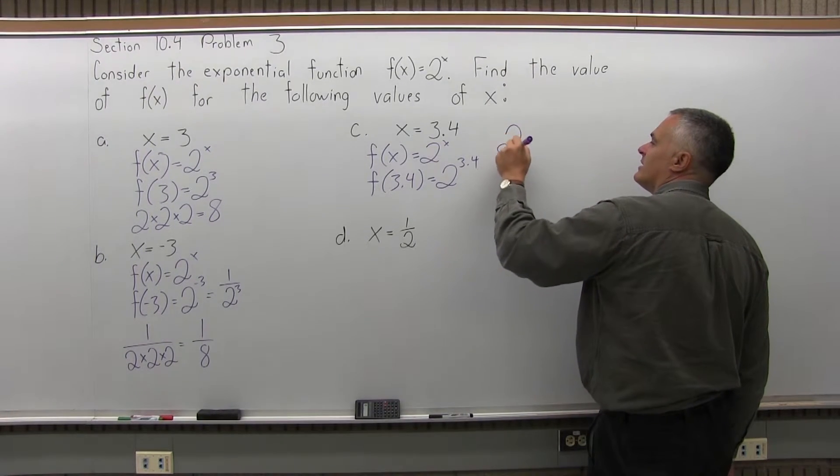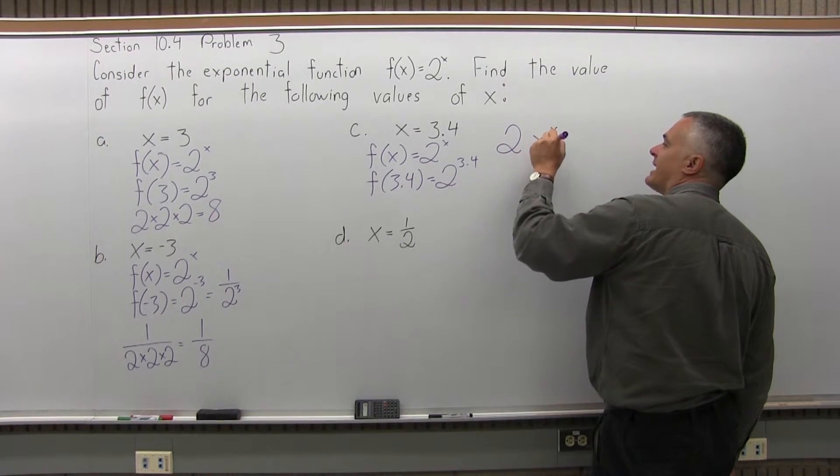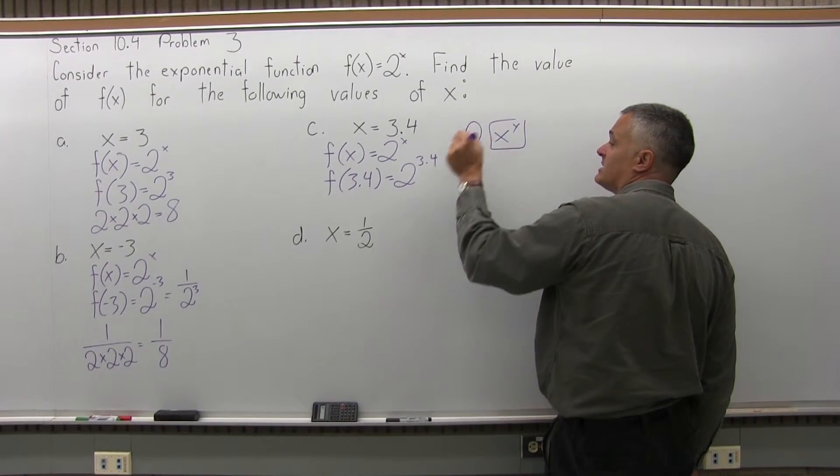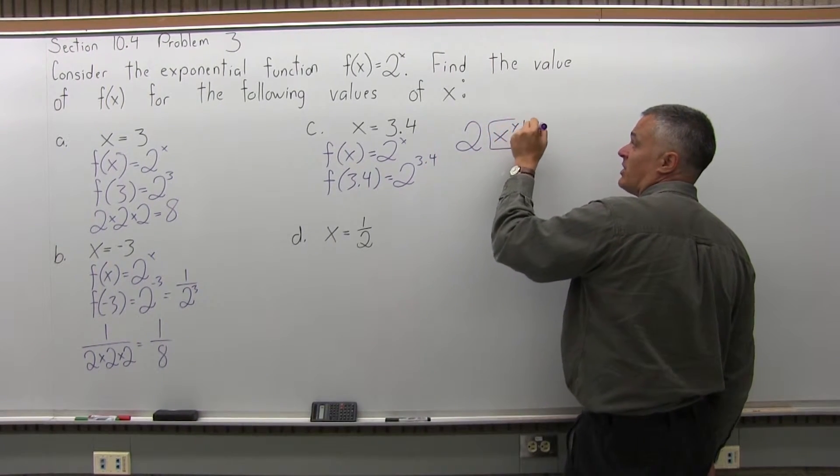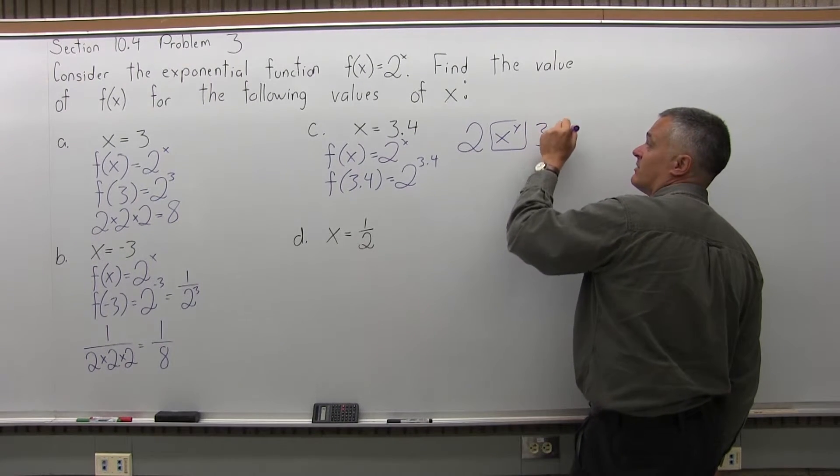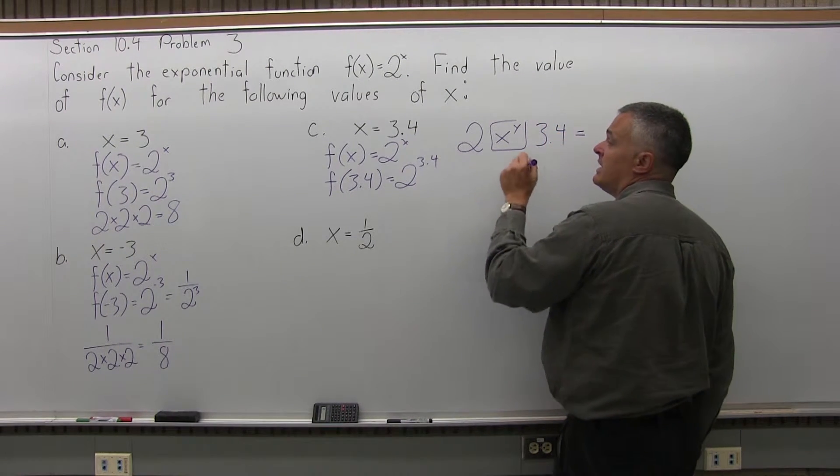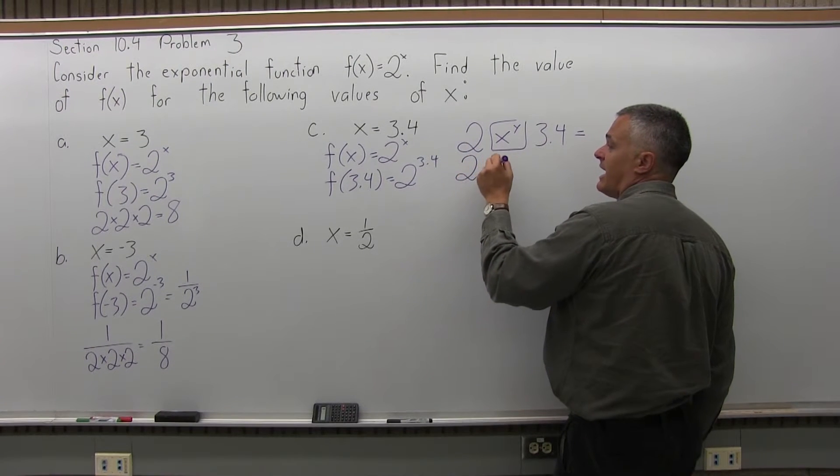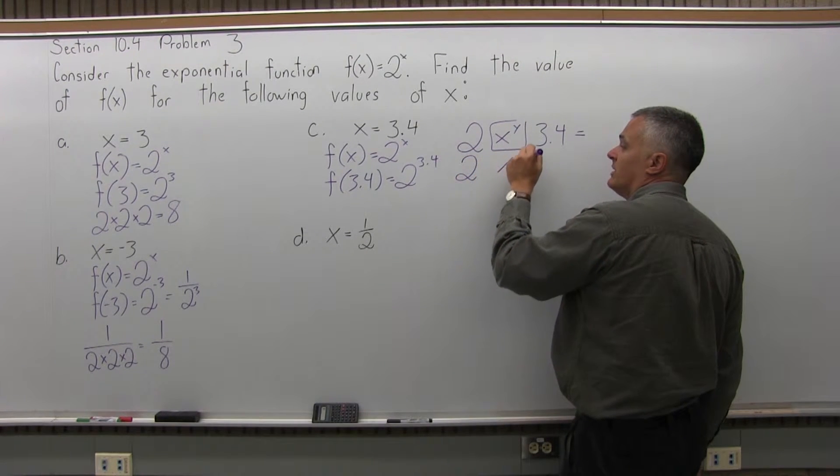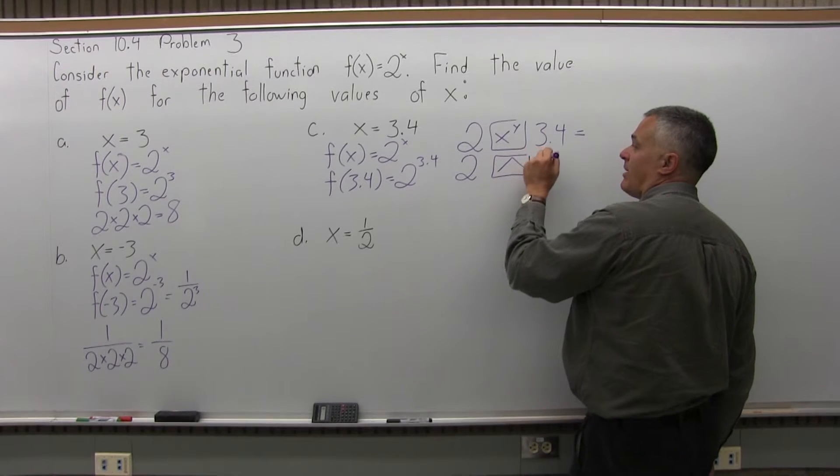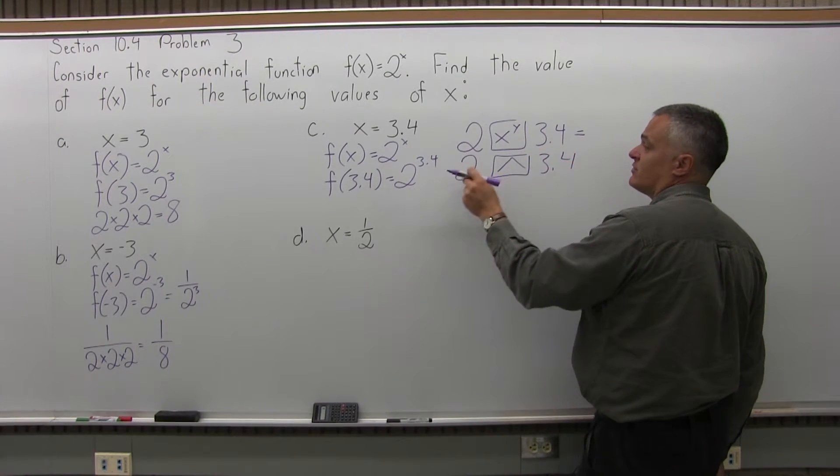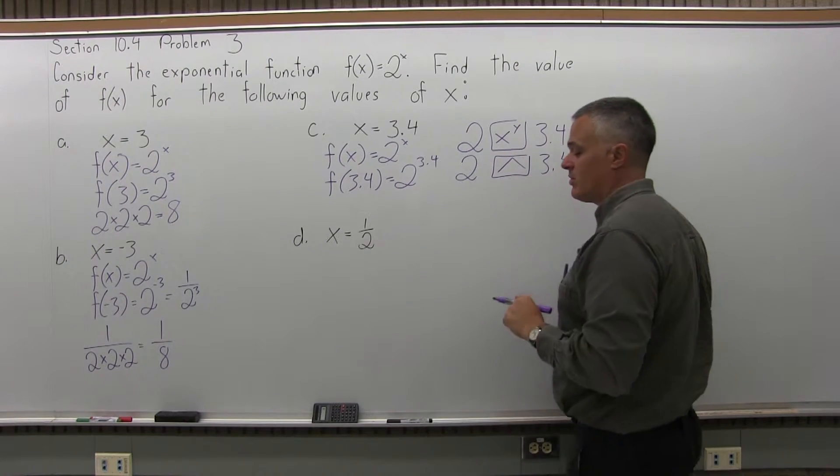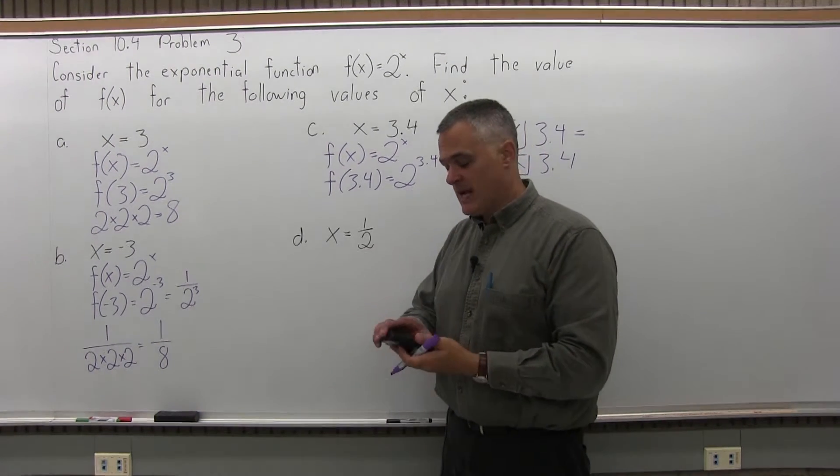With most calculators, the exponent button looks like x to the y power, or x with a superscript of y. So you'd enter the base of 2, press your exponent button on your calculator, put in the exponent of 3.4 and hit equals. My calculator has the x to the y button. Some brands have an exponent button that looks like an arrow that points up. So you would enter the base of 2, press the exponent button that looks like an arrow that points up without the stem of the arrow, and then the 3.4.